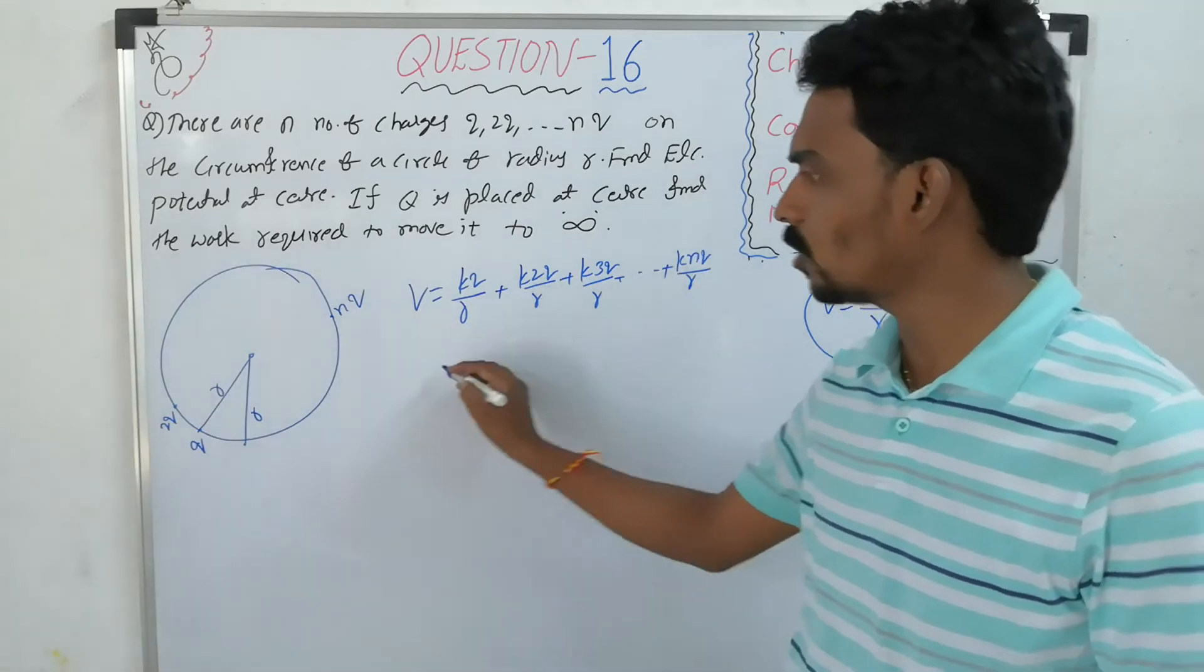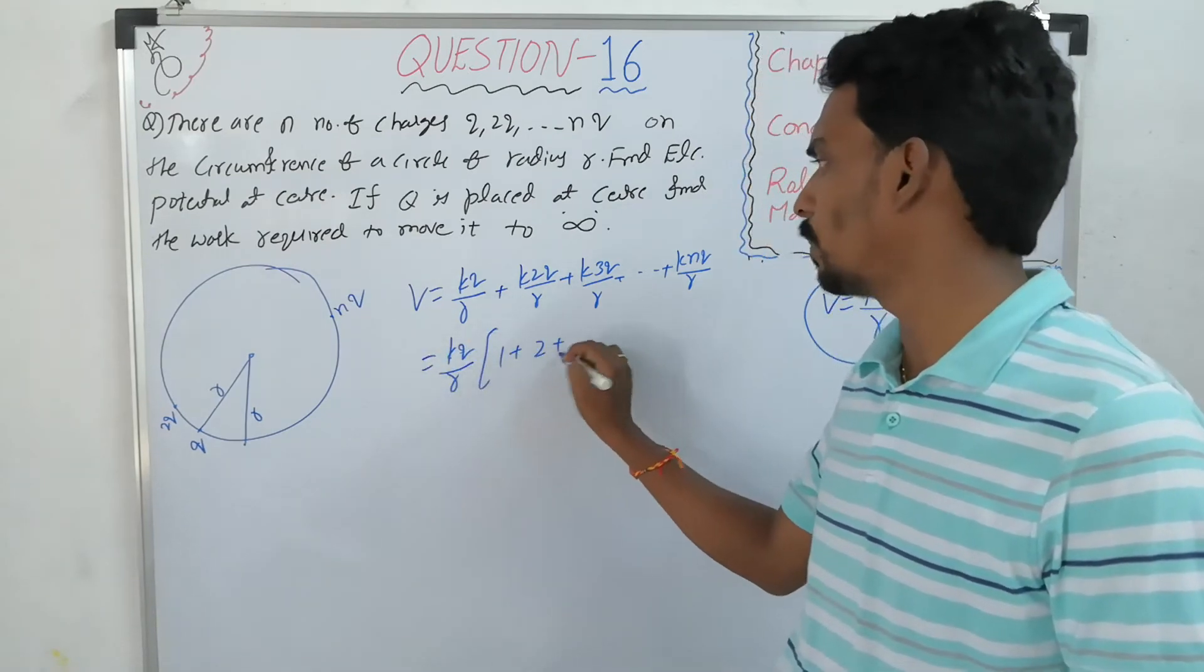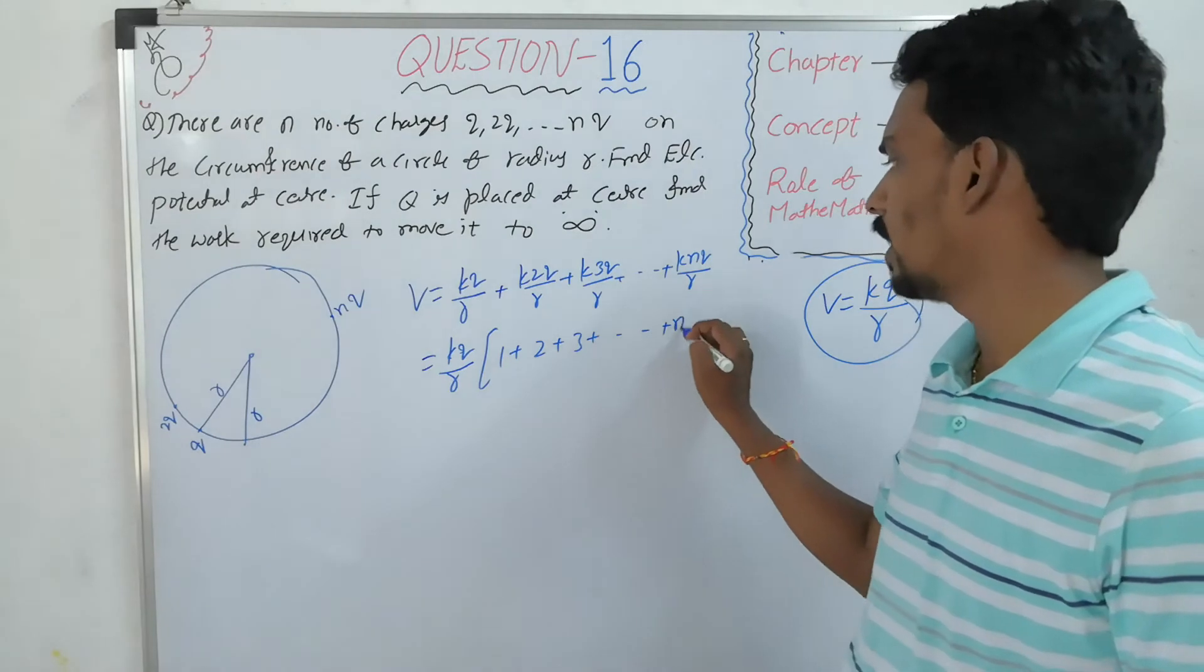So in each term, KQ by R is the same. Take it out. So 1 plus 2 plus 3 and so on up to N.